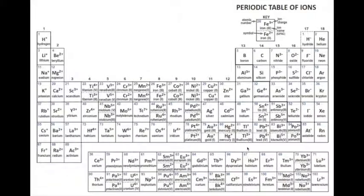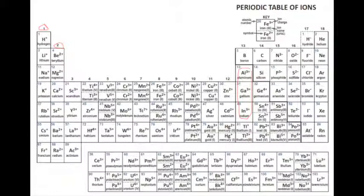Looking at the periodic table of ions, Group 1A metal cations always have a constant +1 charge, Group 2A metal cations always have a +2 charge, and Group 3A metal cations always have a +3 charge. Some transition metals such as silver and zinc also always have a constant charge. In those cases, the cation has the same name as the element.